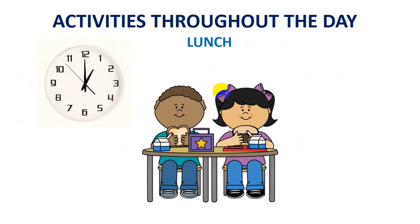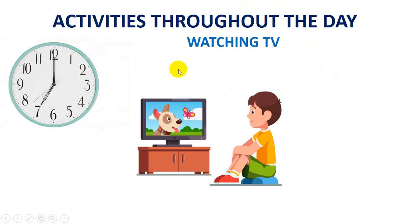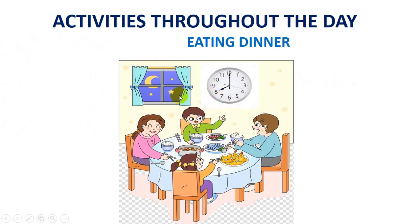Now these kids are having their lunch at 1. Lunch is mostly taken after midday, so I will be using PM. Now this kid is watching TV in the evening, so I will be using PM. Dinner time — it's 8 o'clock and you can see there is a moon and some stars from the window. Dinner is served at night, so I am going to use PM.